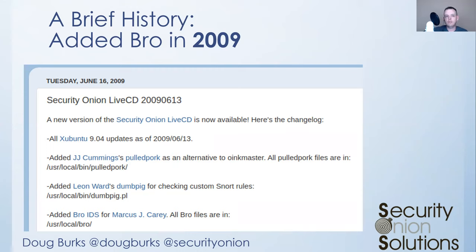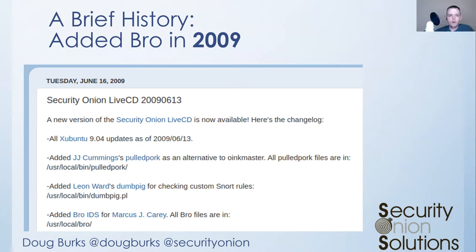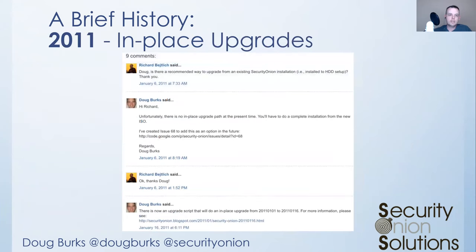Building that community and working with other communities is really what today's webinar is all about. So that was 2009 — we added Bro and we've never looked back. That's been a huge addition to the project. Fast forwarding to 2011, this is one of the first discussions that Richard and I had. At that point, the Security Onion distro was really just a live CD, because it was still very much a hobby project for me. I would get up early in the morning and work on Security Onion before I started my real job, and all I really had time to do was build a live CD.